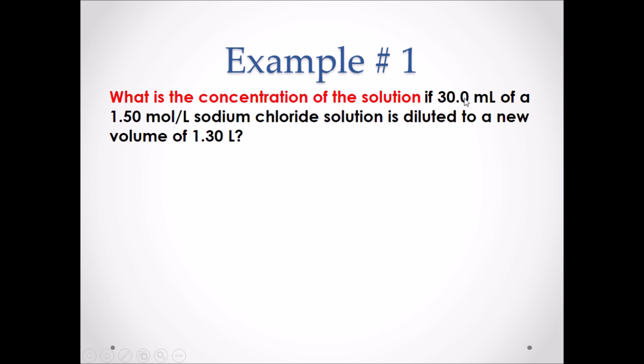We are given the initial volume and concentration of the solution, and then it says we are diluting it to a new volume of 1.30 liters, and we are trying to find the new concentration. Therefore, we're looking for C2. Also note that our initial volume is in milliliters, so we are going to convert our final volume to milliliters. You could also convert both to liters.